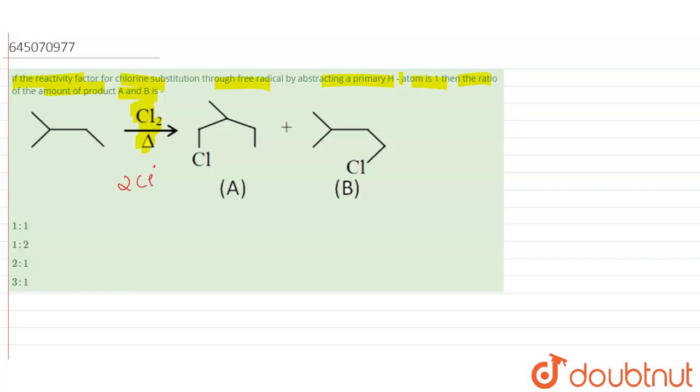If you see, the attack of chlorine has happened on this part, on this part, and this part. So these are the two major products formed, that is A and B. What happens over here, if you write the open form for this...